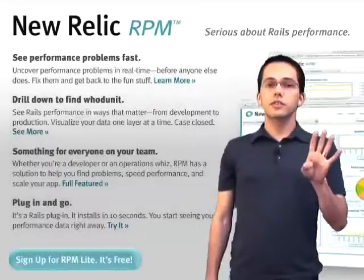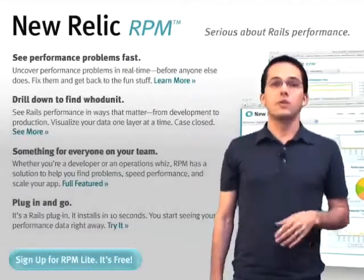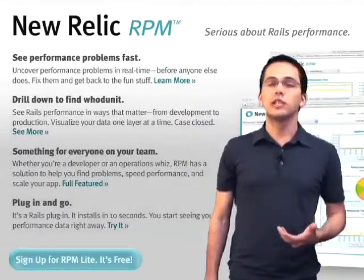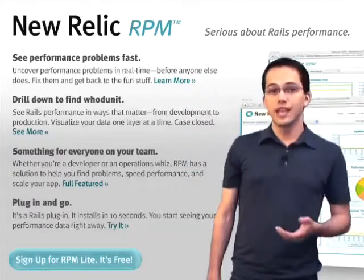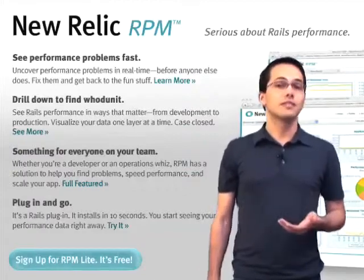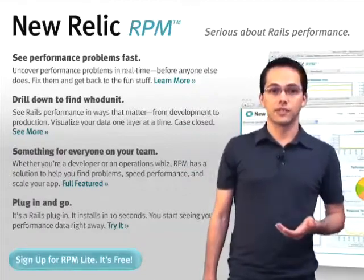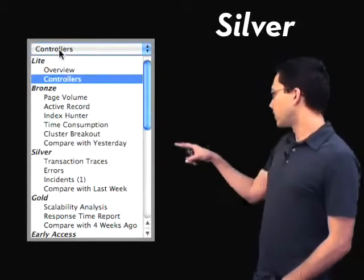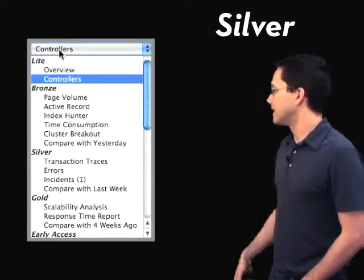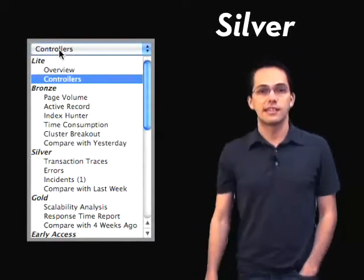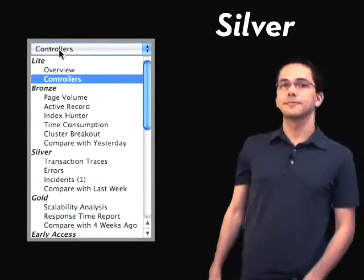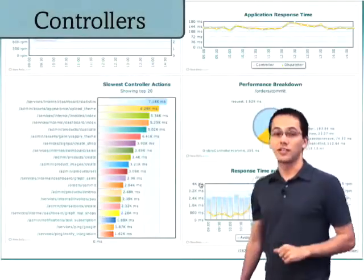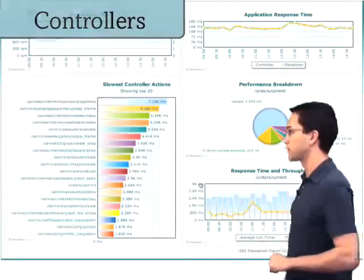In the fourth screencast, if you haven't watched it yet, we went over the basic features of New Relic RPM, both the free and the bronze tier services. Now we're going to be taking a look at the silver reports, starting out with transaction traces. To get to transaction traces, we're going to start out on the controllers report.